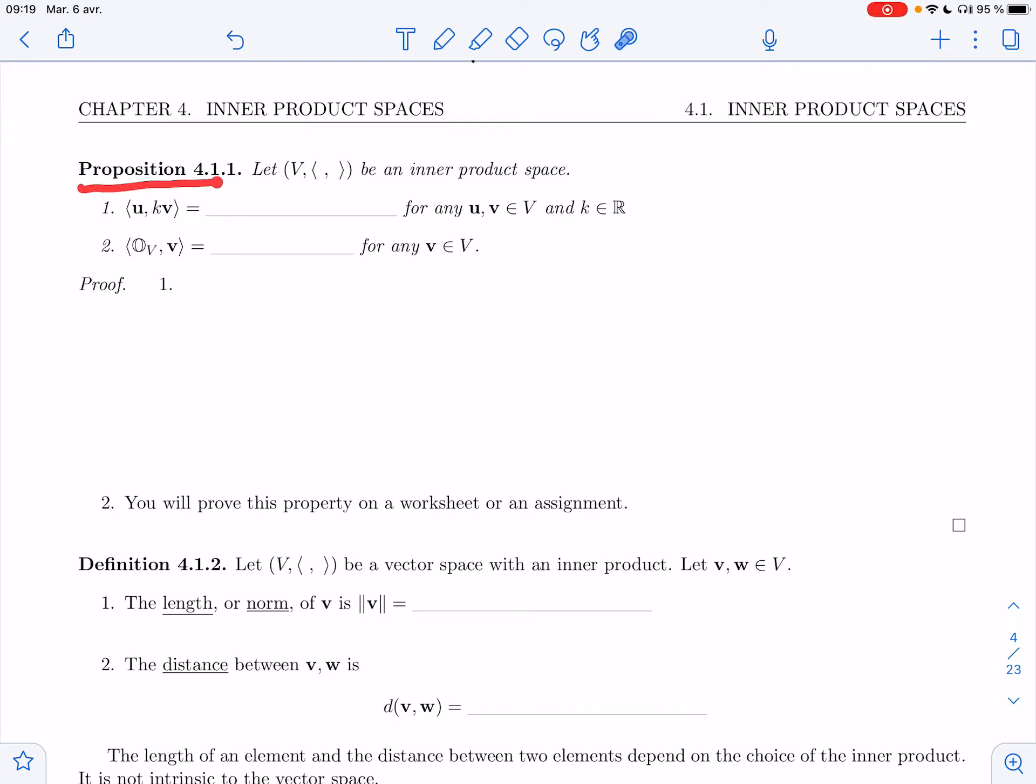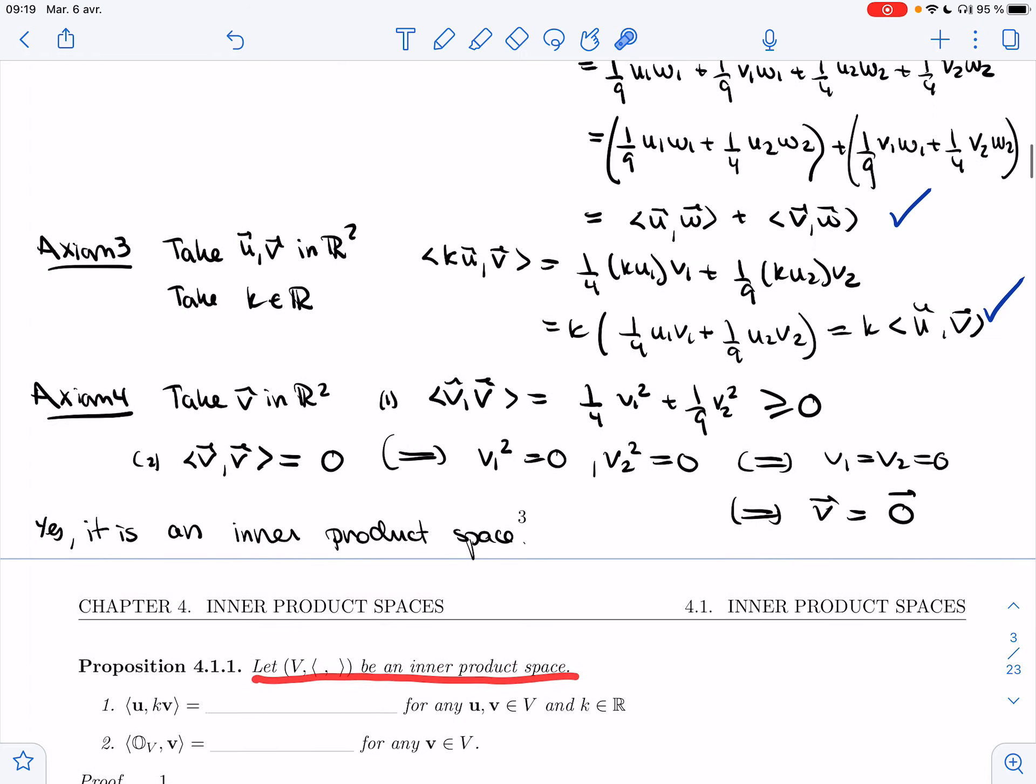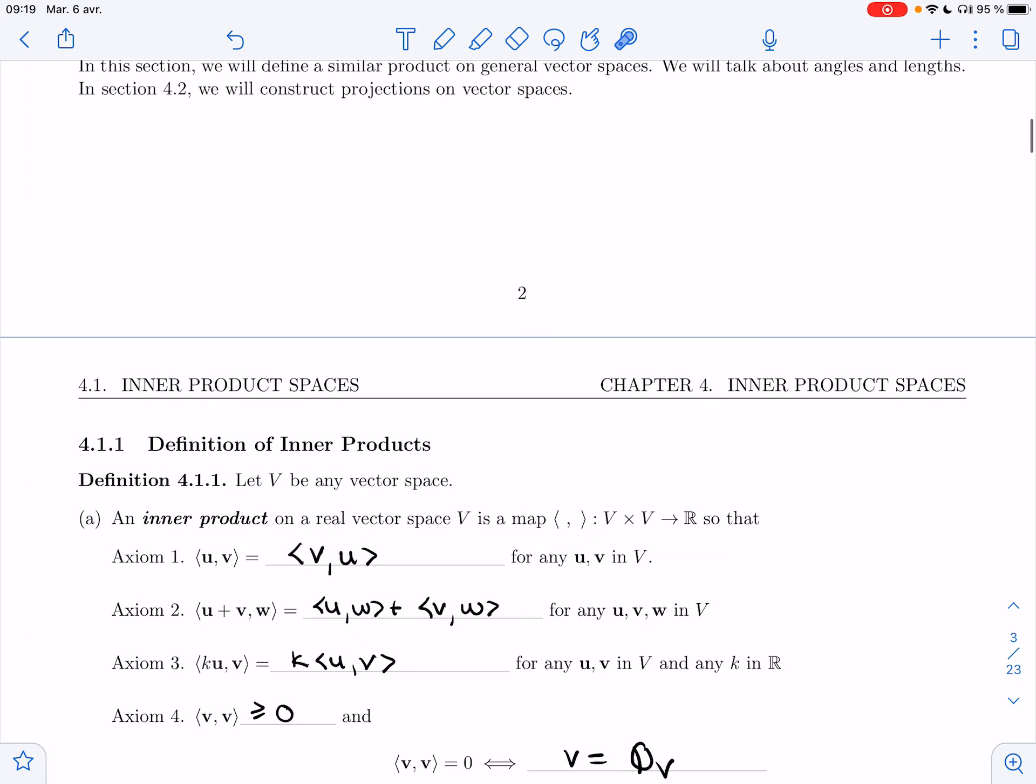Welcome back. Let's look at Proposition 4.1. I'm going to assume that I have an inner product space. So I have a map like this with these four axioms true.